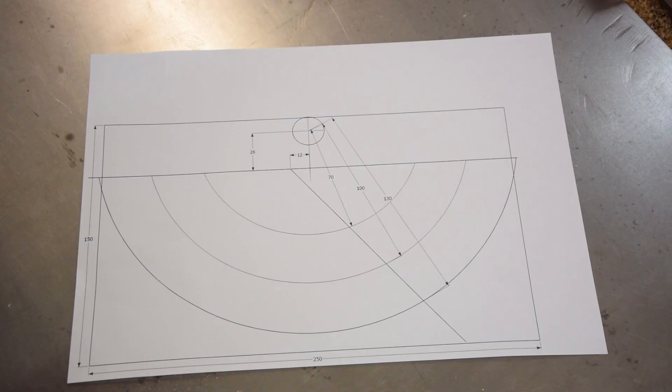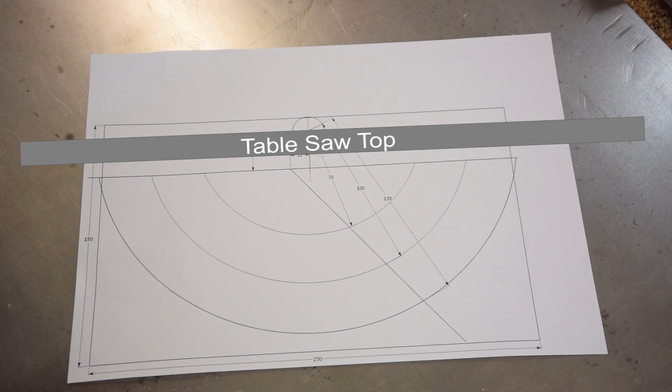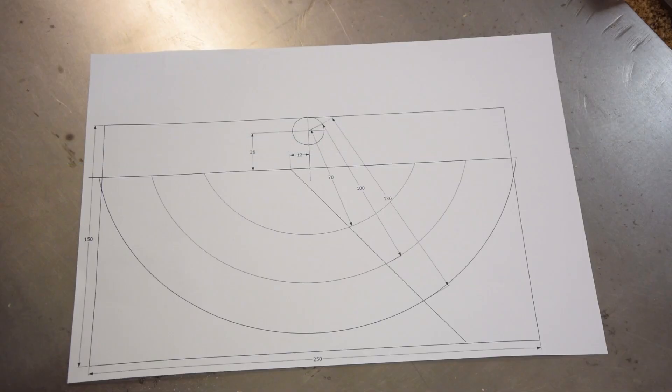So this is gonna be the position of the trunnions in respect to the tabletop. The center of these circles and therefore the tilting axis of anything that's attached to the trunnions must be located exactly in one plane with the tabletop. Otherwise the trunnions will not work as intended.